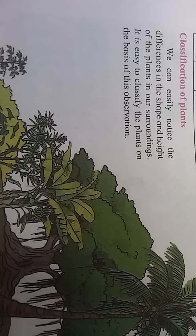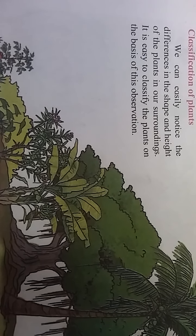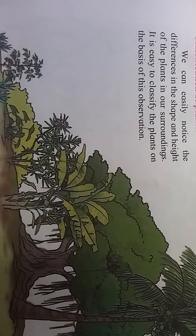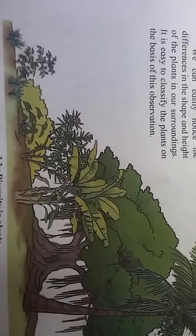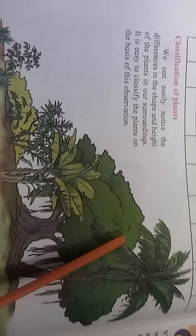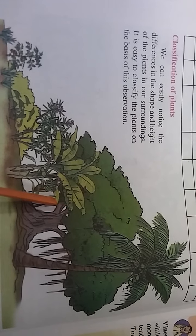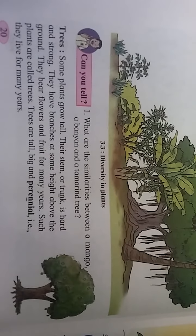In the classification of plants, we can easily notice differences in the shape and height of plants in our surroundings. It is easy to classify plants on the basis of observation. Different plants have different heights and different shapes of their leaves, making it easy to classify them by observation.